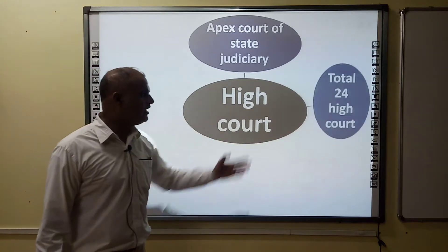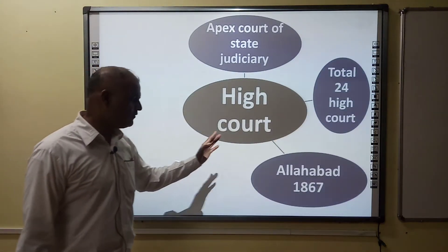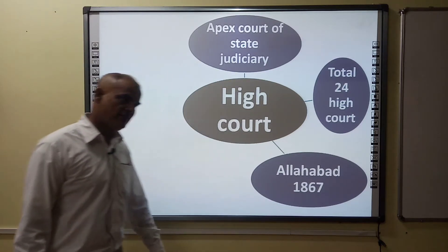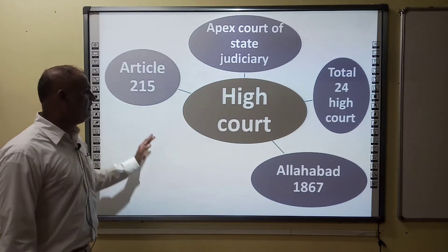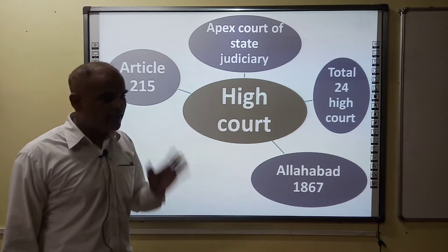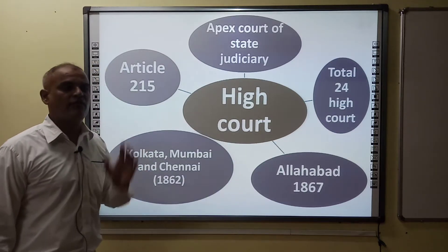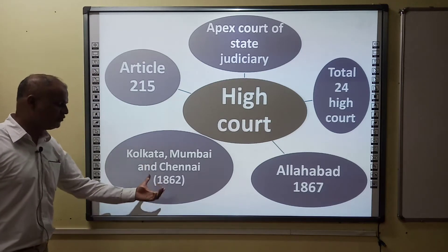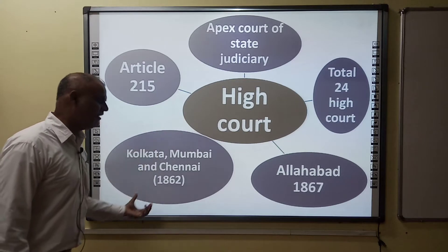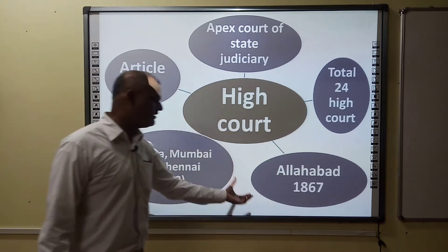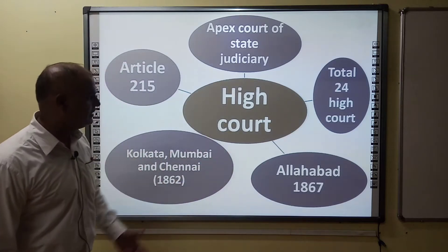In India the total number of High Courts is 24. The Allahabad High Court was founded in 1867. According to Article 215, each state in India has one High Court. The High Courts of Kolkata, Mumbai, and Chennai were founded in 1862 — these are the oldest High Court foundations in India. The Allahabad High Court, founded in 1867, is the biggest High Court in India.